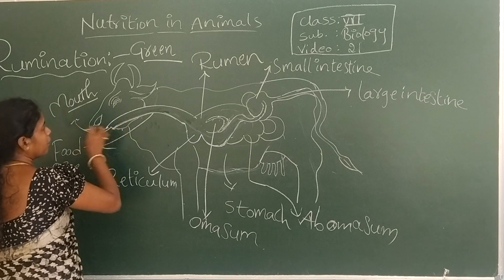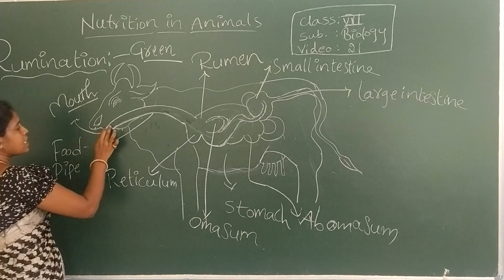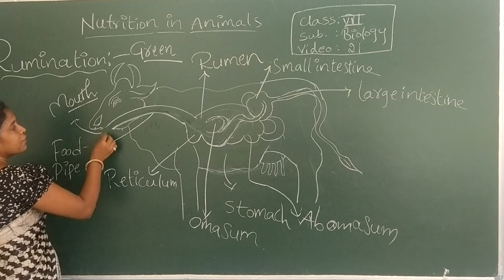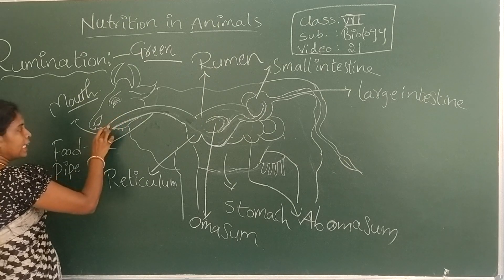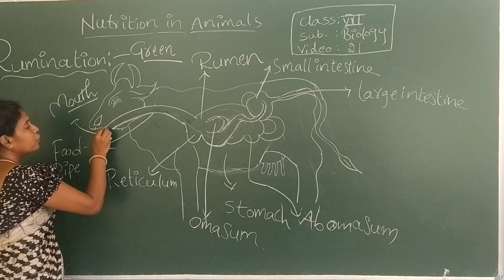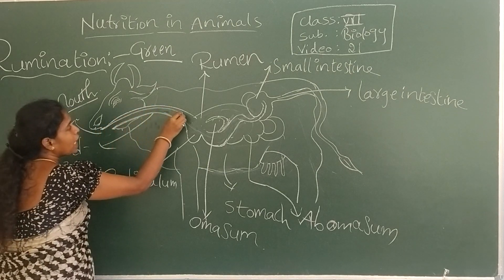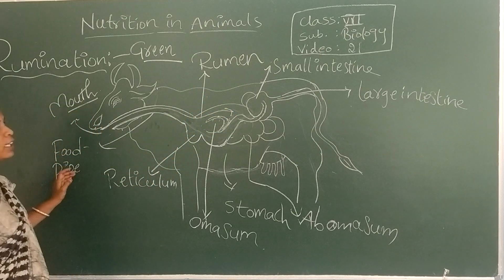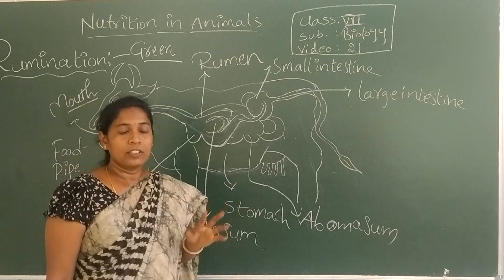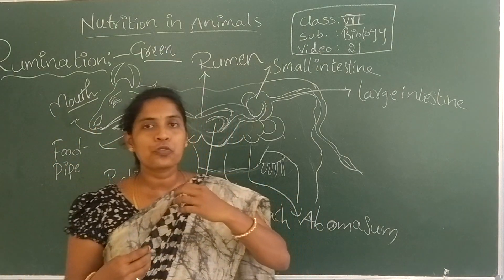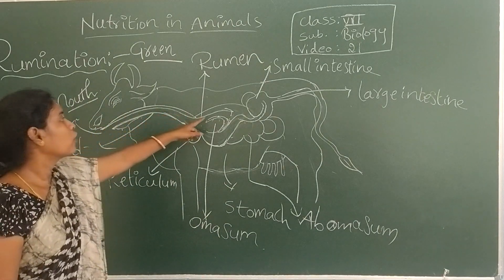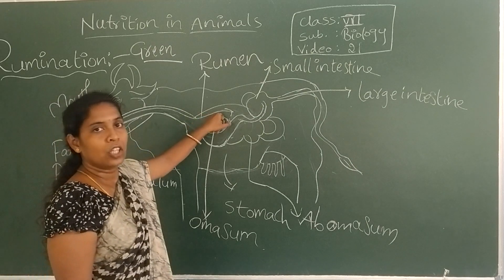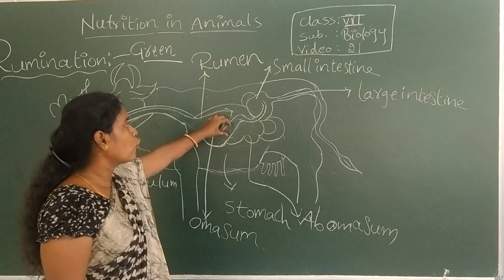When the cow is eating food from the mouth, the food directly passes into the body — into a part called rumen. Without chewing, the food goes from mouth to esophagus to rumen, which is the second part of the stomach, and is stored there.